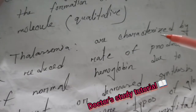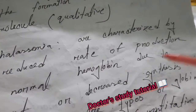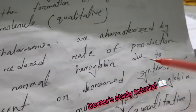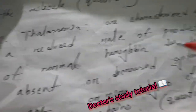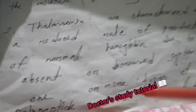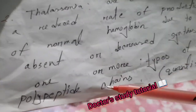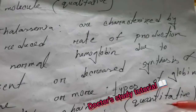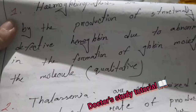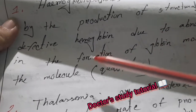Thalassemia is characterized by a reduced rate of production of normal hemoglobin due to absent or decreased synthesis of one or more types of globin polypeptide chain — it is a quantitative defect. In contrast, hemoglobinopathy involves structurally defective hemoglobin.